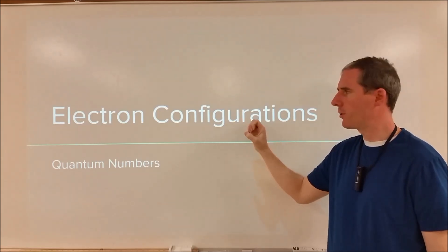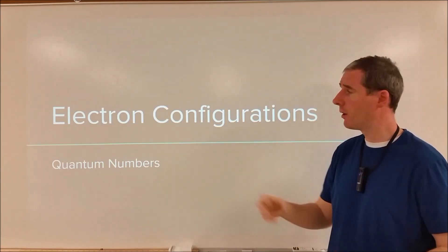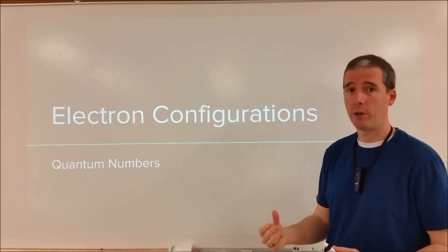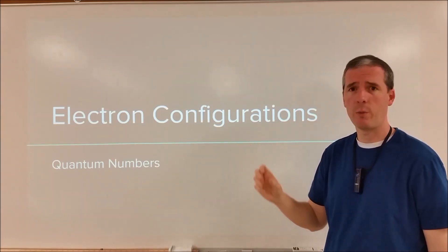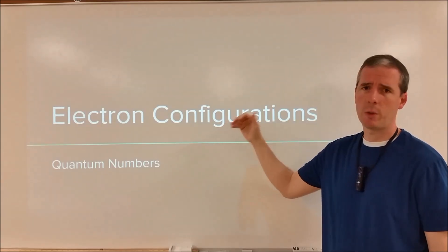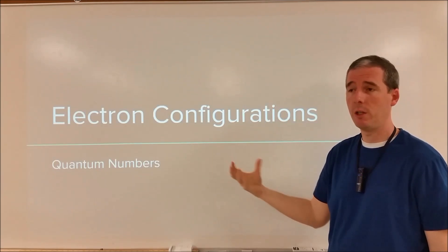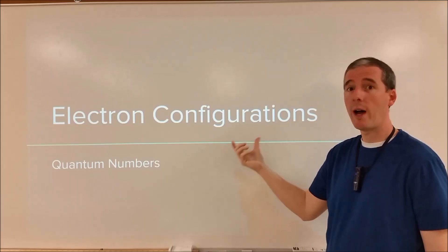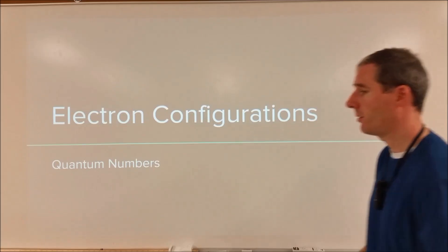I'm going to show you two things about electronic configurations. It's very easy to go through a chemistry class and learn how to do an electronic configuration. We're going to start with how to do an electronic configuration, how to write them out for different elements. The second thing we're going to do is explain what they are, giving an introduction into quantum numbers and quantum chemistry, and why it is that you're learning how to do these electronic configurations.